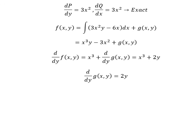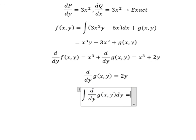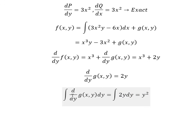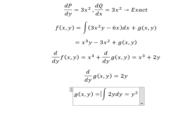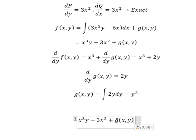Next, we integrate both sides. The integration of 2y gives y². Now we know that the solution is x³y - 3x² + y² = f(x,y), and we add the constant C. That's the constant of integration.